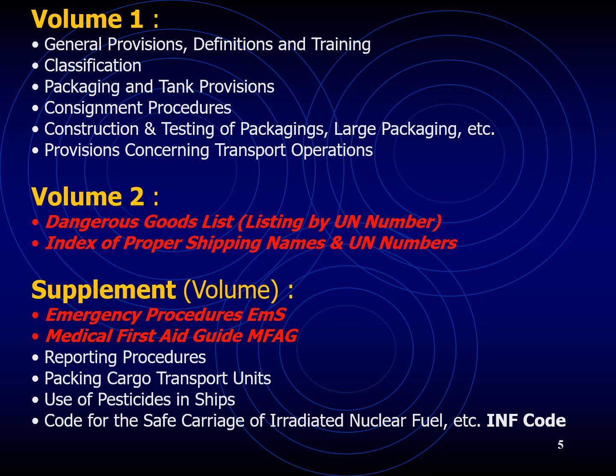Volume 1 is not something you really have to go into deeply — it talks about general provisions, definitions, training, and classification of goods. It is mainly from the shipper's perspective, for those involved in packaging and labeling. From your perspective as a mariner, Volume 2 is more important, because Volume 2 provides you with the details of the cargo — all the essential details you need for carrying these goods on your ship.